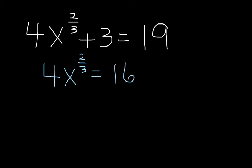This time I still have a four in front of my base and power that I need to get rid of, so I'm going to divide both sides by four. And that leaves me, when these are canceled, x to the two thirds power equal to four.